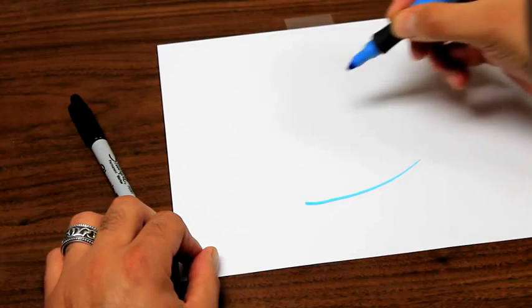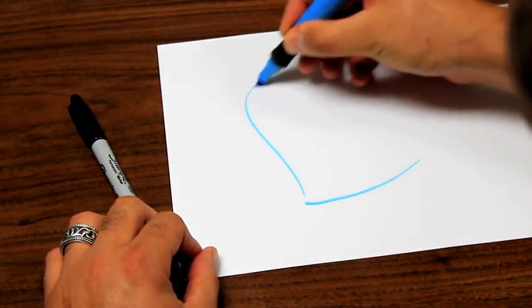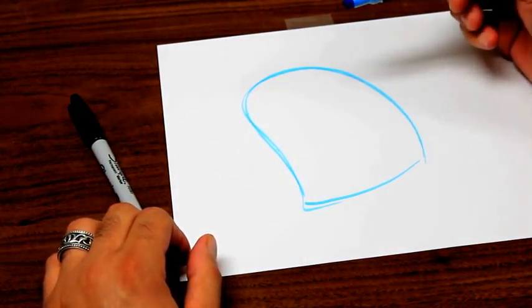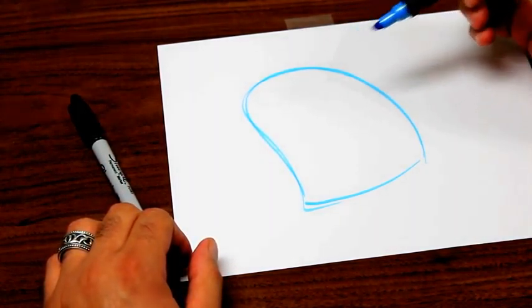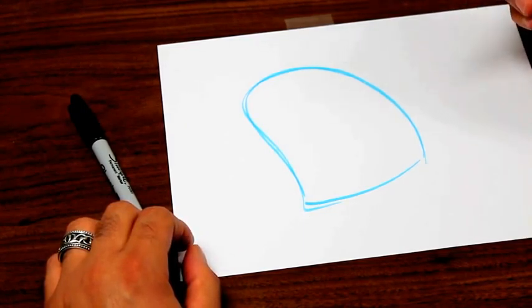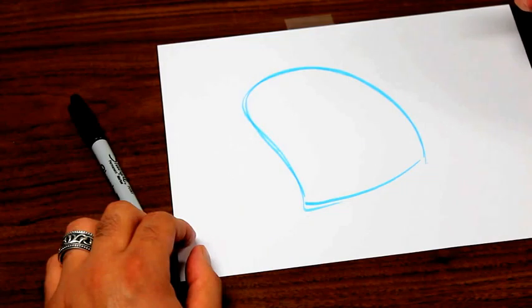What we're going to do is envision an oval that has sort of been dropped on its side. So imagine if you were holding an oval and you dropped it on the ground. I'm drawing with this highlighter so that it shows up on the video, but I'd like you to use a pencil and draw lightly first.